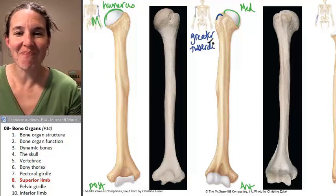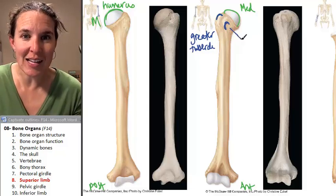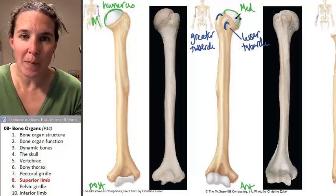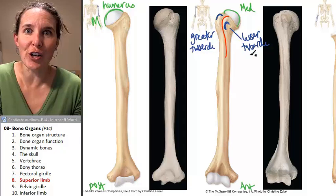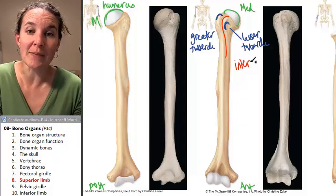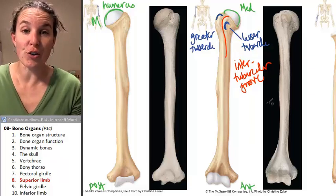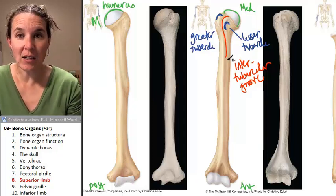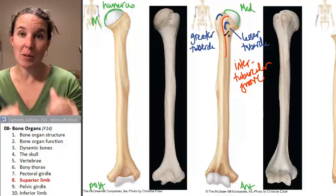That bump is called the greater tubercle. The greater tubercle is separated from the next little bump called the lesser tubercle by a groove called the intertubercular groove, also called the intertubercular sulcus. The tendon of the long head of biceps brachii travels between the two tubercles and helps stabilize the shoulder joint.